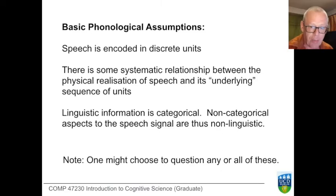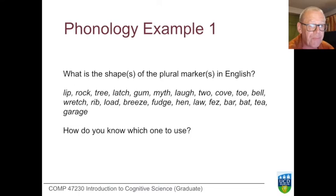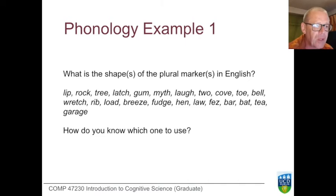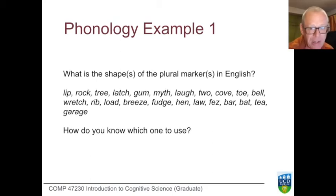On these assumptions we can play the game of phonology. If you were taking a phonology class, here's the kind of exercise you might get. There's a bunch of English words all in the singular, and we might ask: you form a plural by adding something — a plural marker. Well, 'lip' has the plural 'lips' — so 's'. 'Rock' has the plural 'rocks' — 's' again. 'Tree' has the plural 'trees' — that's a different sound: we had 's' for the first two and now we've got 'z'. 'Latch' has the plural 'latches' — that's a third one.